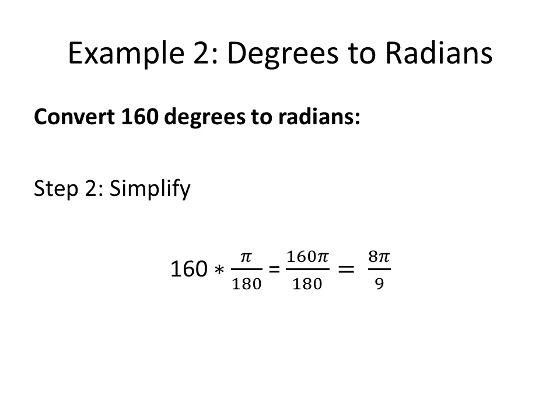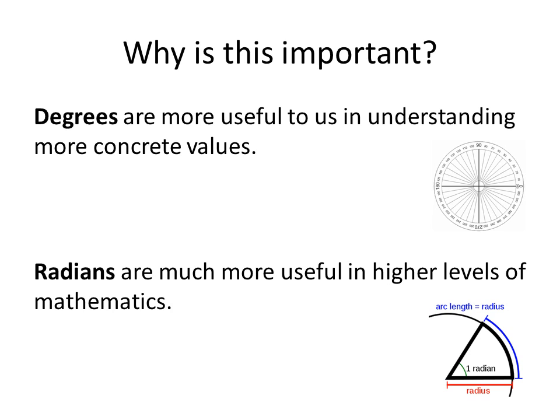It is important to know why we are actually doing this conversion back and forth. Degrees are more useful to us in understanding more concrete values. We seem to have a better understanding that 30 degrees represents 30 degrees on a particular angle, while many people won't know what pi over 6 is easily. So degrees are very useful for us to have a tangible understanding of what's happening in a particular situation.